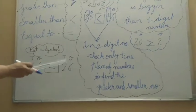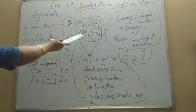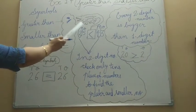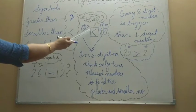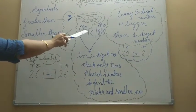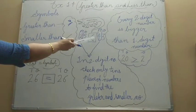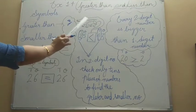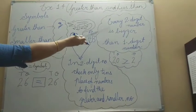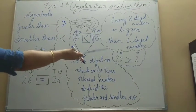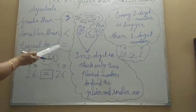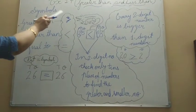To check for greater, we check the tens place of the number. The mouth opens toward the bigger number — whichever is greater. So this is a quick summary: greater than, smaller than, and equal to. Now, in this way, you have to solve exercise 1.4 in your book.